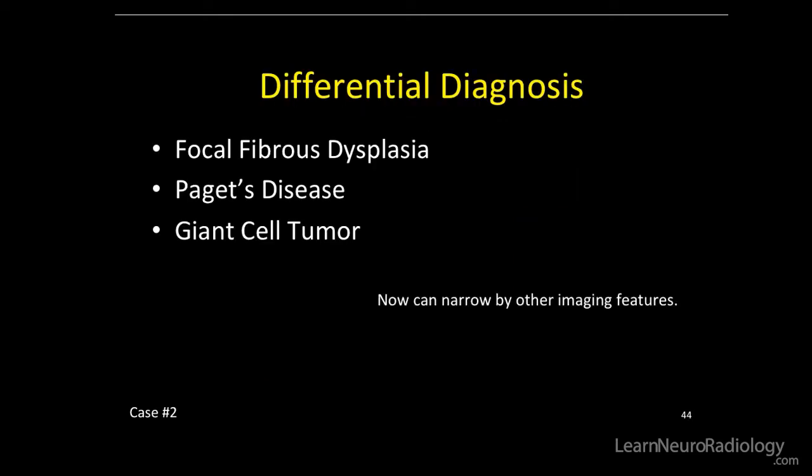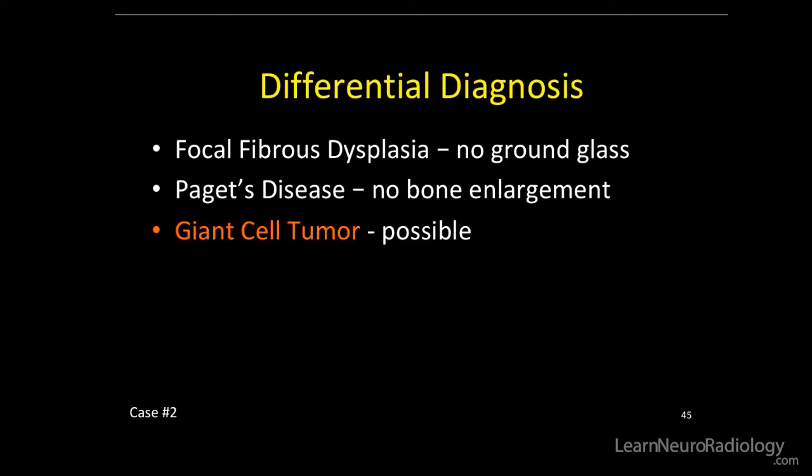Let's narrow this down a little bit. Is it fibrous dysplasia? Probably not — no classic ground glass matrix for this lesion. Is it Paget's disease? No, because the bone itself wasn't enlarged, the cortex wasn't enlarged. So giant cell tumor is possible.